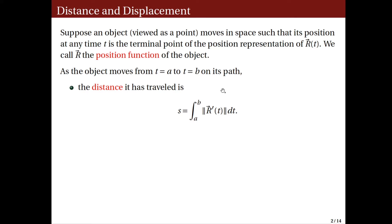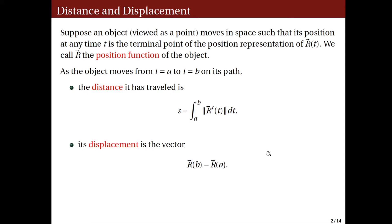As the object or the particle moves from t equals a to t equals b, its path traces a curve in the three-dimensional space. Hence, the distance it has traveled is the length of the arc it traces from t equals a to t equals b. The formula for arc length for a curve in space is the integral from a to b of the norm of r prime of t dt. And the displacement is a vector, r of b minus r of a — that is, the vector from the terminal point minus the initial point.